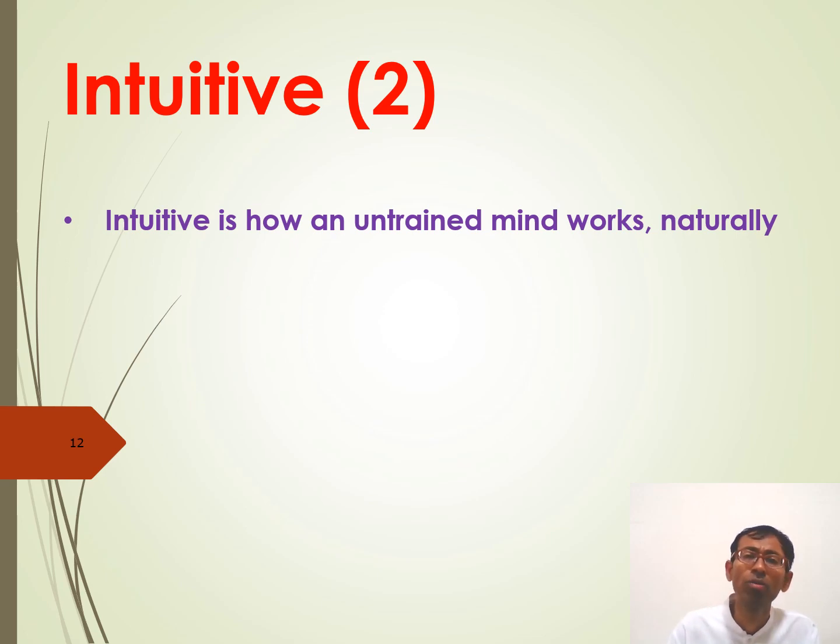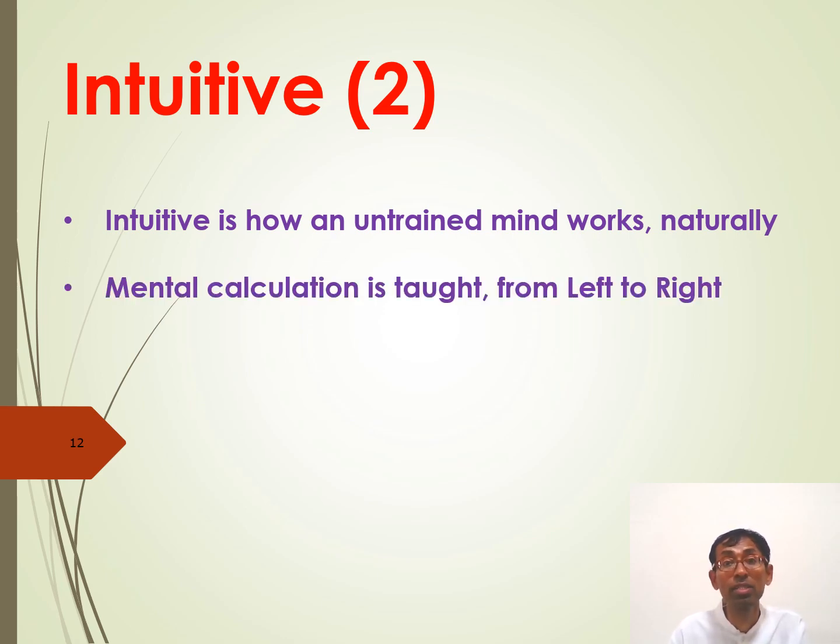Intuitive is how an untrained mind works naturally. Suppose, whenever I ask a small child, what is 23 times 22, give me an approximate answer. Remember, elder children take time, but younger, very small children say, four hundred. And when I ask them, how did you do it? They say, twenty times twenty is four hundred. That means, they started the multiplication from the left side rather than right side. That is what we are usually taught in schools. The untrained mind actually works from left to right. In Vedic mathematics, we teach mental calculations that are from left to right. And we also teach from right to left. And children are free to explore their own ways.